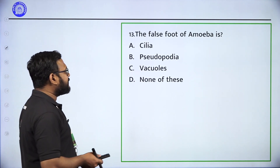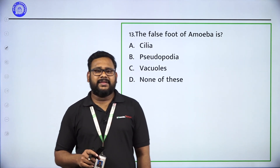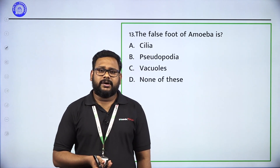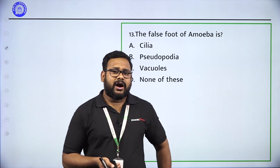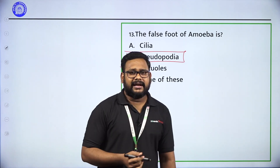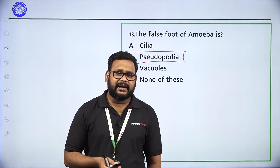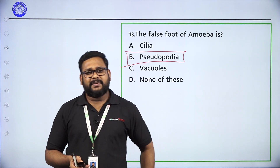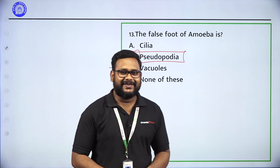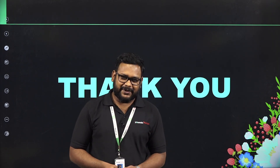The false foot of amoeba is called — acylia, pseudopodia, vacuoles, or none of these? The false foot of amoeba is called pseudopodia. Cilia are used by paramecium. This is the main topic — I'll talk to you soon.